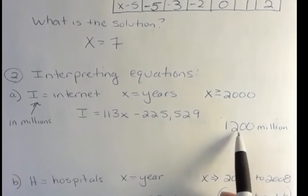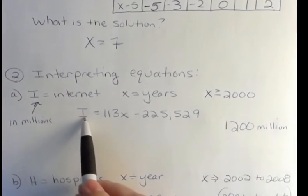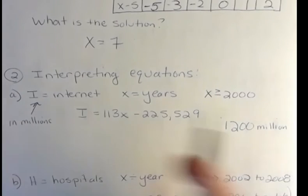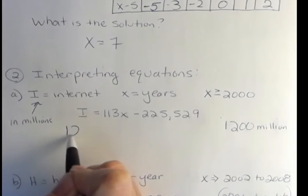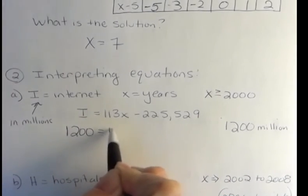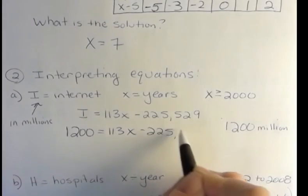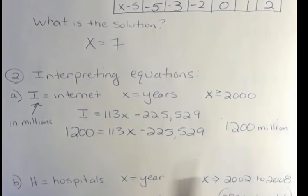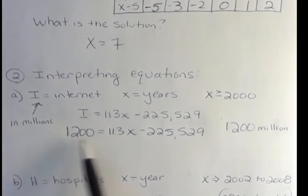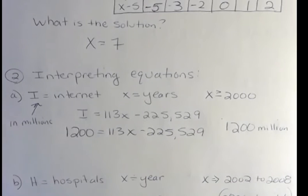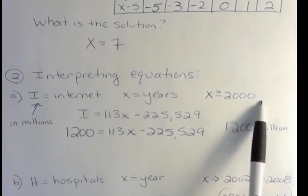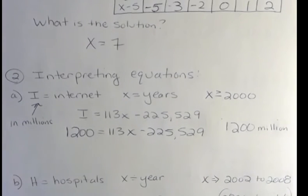So all I want to do here is say, well, when will internet users be 1,200? So I would just replace I with 1,200. And then we've solved several equations together, so I don't need to solve this out. But now I'm going to add this number to both sides and divide by 113.